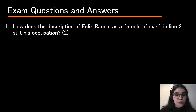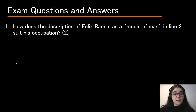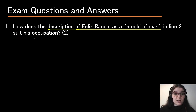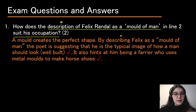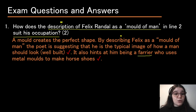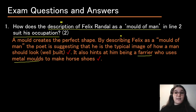How does the description of Felix Randall as a 'mold of man' in line two suit his occupation? I would split this into two parts: first explain the description, then say how it suits his occupation. A mold creates the perfect shape, so by describing Felix as a mold of man, the poet suggests he is the typical image of how a man should look — he is well built. It also hints at him being a farrier who uses metal molds to make horseshoes, relating the description to his occupation. And there we get our two marks.